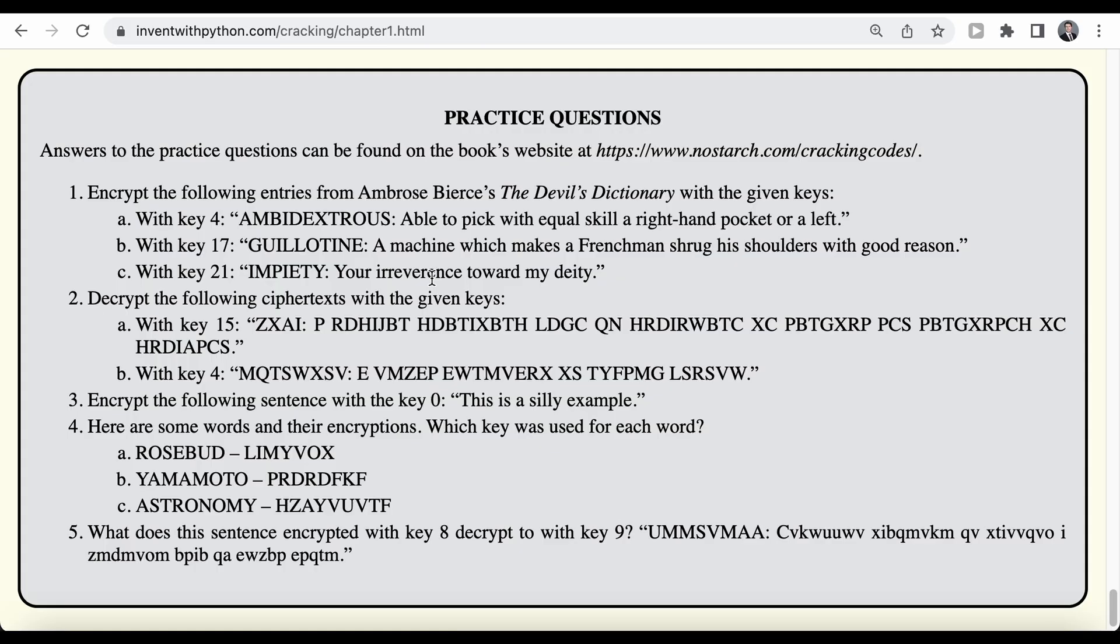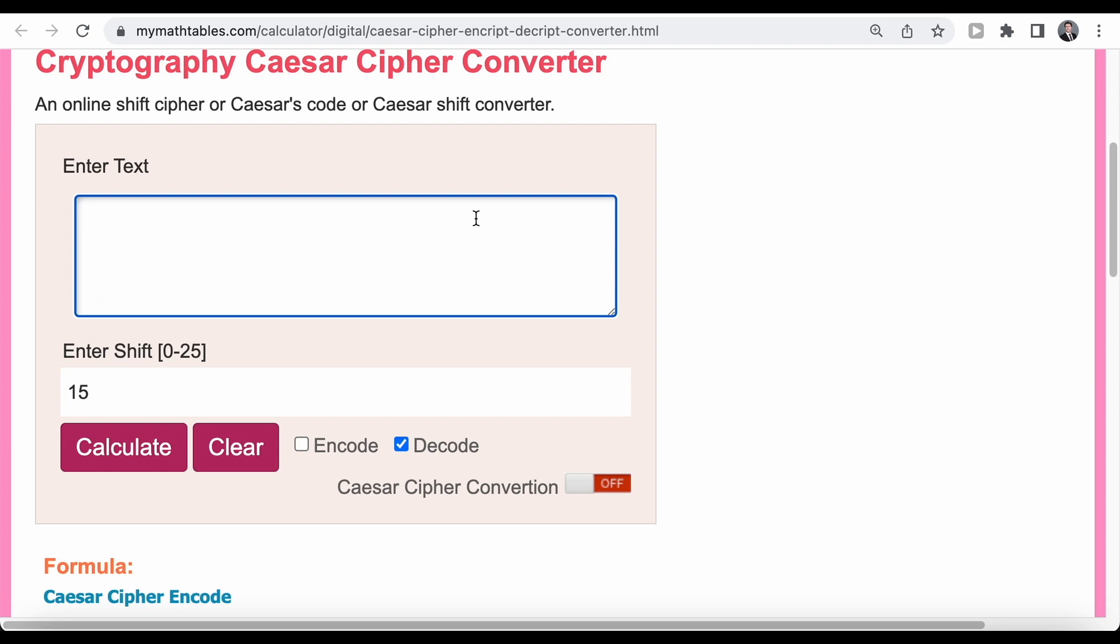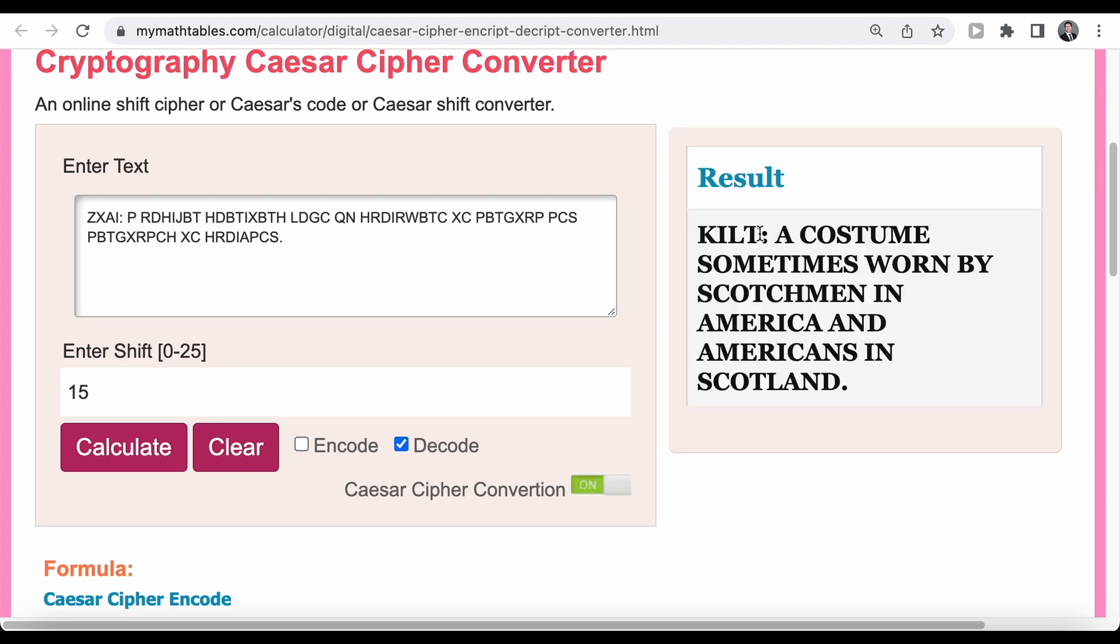Now, the second question is going to be a little bit more interesting because we start out with an encrypted message. And we are going to decrypt it. So here we have the following ciphertext. And this ciphertext here is encrypted with key 15. So this is quite cryptic. But of course, we can head over, select our text, we need to select our key 15. And in this case, we want to decode the message.